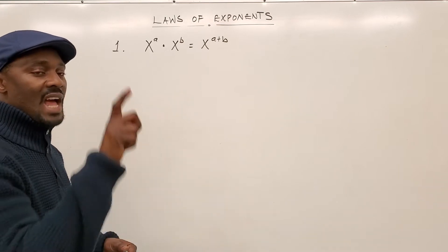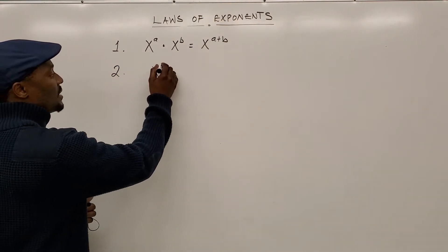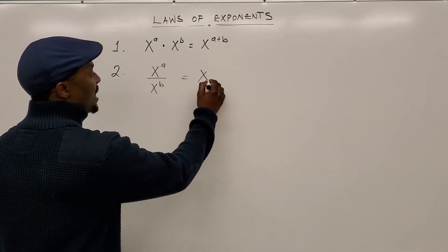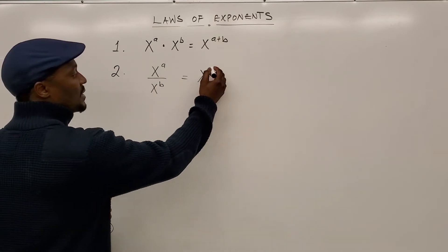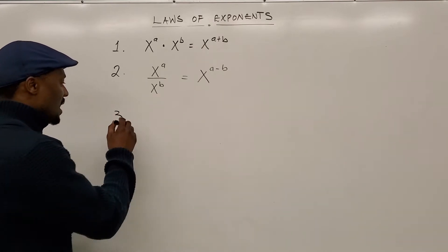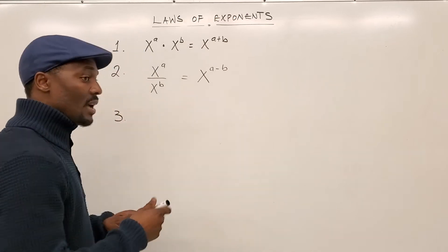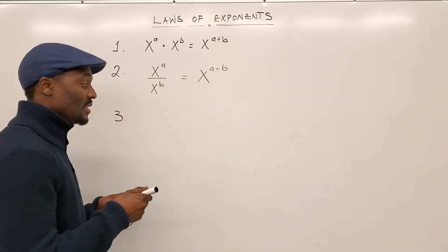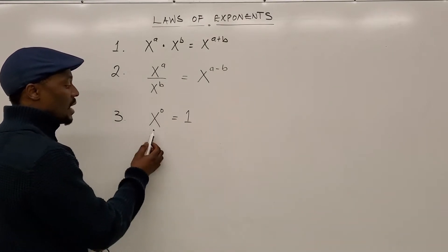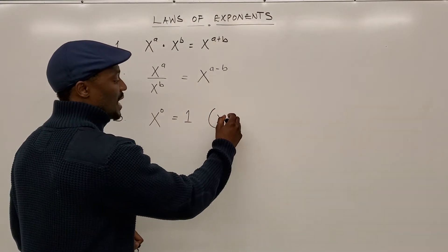If you're multiplying, you just add the exponents. The second one is the quotient law: when you're dividing x raised to power a by x to power b, your answer is x to the power of the difference, a minus b. The third one says if any number is raised to power zero, the answer is one — as long as that number is not zero itself. So x to the power of zero is always equal to one, no matter what x is, but x cannot be zero.